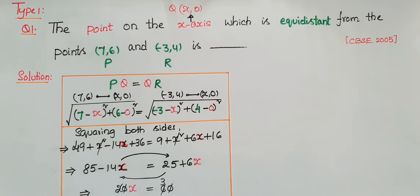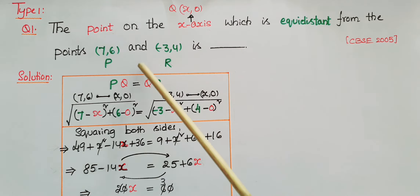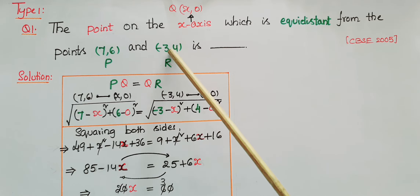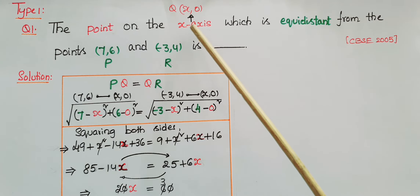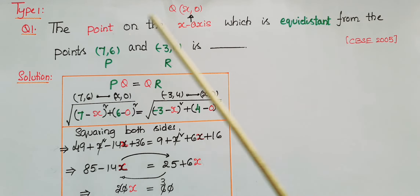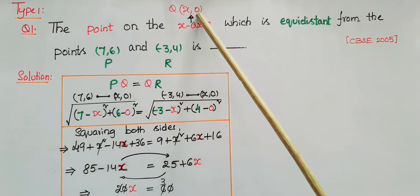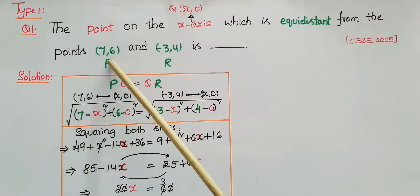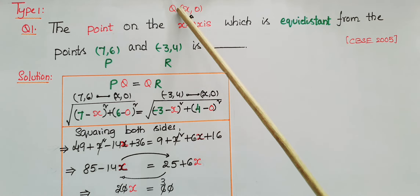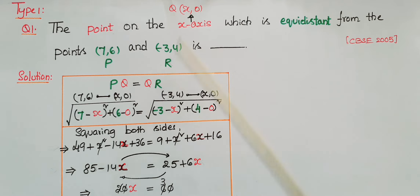This is the first type of problem: find the point on the x-axis which is equidistant from the points (7, 6) and (-3, 4). Here the two points are given and we have to find the point on the x-axis which is equidistant from these two points. We know that the point on the x-axis is in the form of (x, 0), where the y-coordinate is 0. We find the distances PQ and QR and set them equal, since this point is equidistant from the two given points, so PQ equals QR.